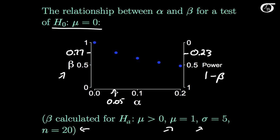If we let alpha increase from 0.05 to 0.1, then we're going to be decreasing the probability of a type 2 error and increasing the power of the test. If, however, we chose an alpha value that was very near 0, beta would creep up very close to 1, and our test would have almost no power. So there is a balancing act between alpha and beta, but in many practical situations people simply pick an alpha level they feel is appropriate and let beta fall where it may.